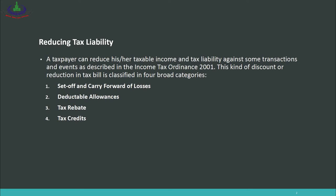There are two possible ways a person can reduce tax: either by reducing taxable income or by reducing tax liability directly. The Income Tax Ordinance 2001 describes certain transactions and events through which tax liability can be reduced. This kind of discount or deduction in the tax bill is classified into four broader categories.